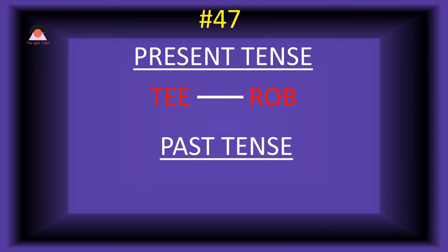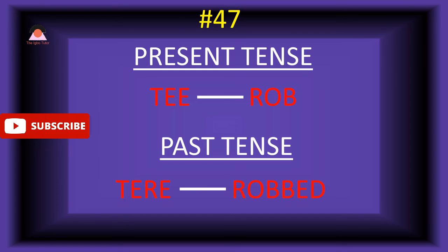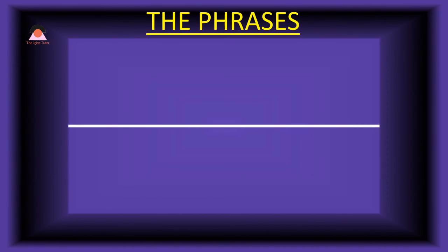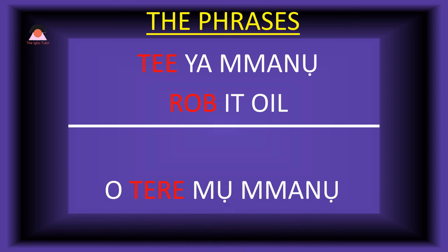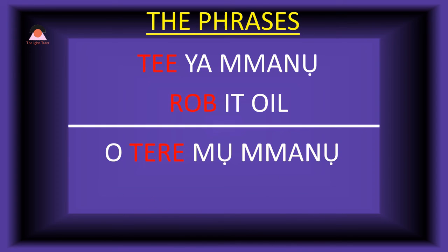Word number forty-seven: 'teye,' meaning 'rub.' The past tense of teye is 'tere,' meaning 'rubbed.' Present tense phrase: 'teye mano' — rub or apply oil. Past tense: 'o-tere mano' — he rubbed oil.